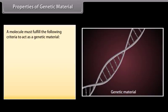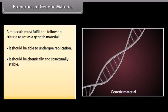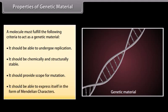Properties of genetic material: a molecule must fulfill the following criteria to act as a genetic material. It should be able to undergo replication. It should be chemically and structurally stable. It should provide scope for mutation. It should be able to express itself in the form of Mendelian characters.